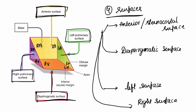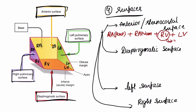The sternocostal surface is formed by the right auricle, right atrium, right ventricle, and left ventricle. It is mostly formed by the right ventricle — that is two-thirds of the right ventricle and one-third of the left ventricle.